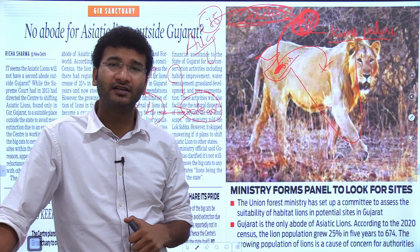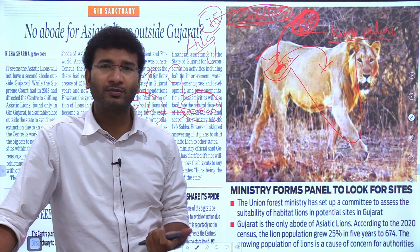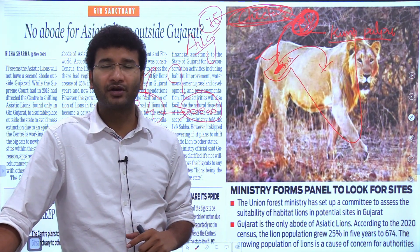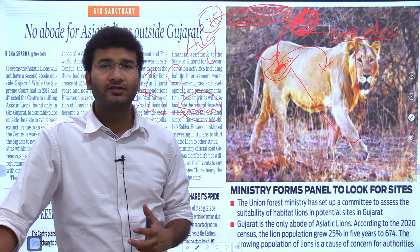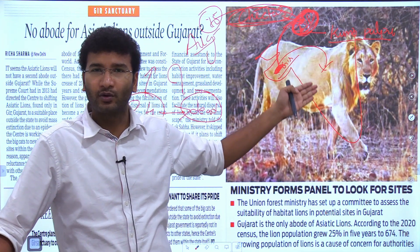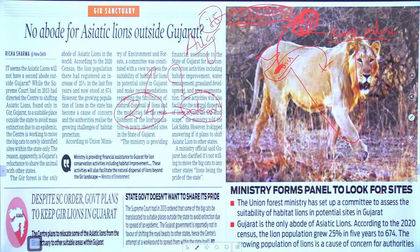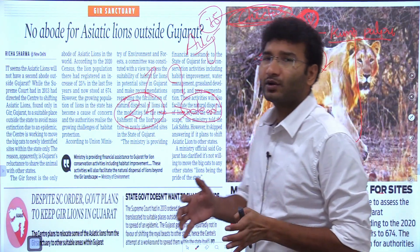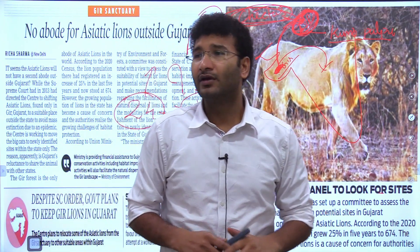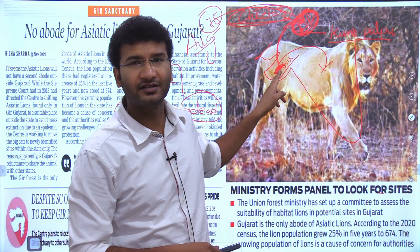This same principle applies to tigers and leopards. Keystone and umbrella species like lions and tigers need to be conserved. The Supreme Court gave clearance for lion relocation and a ministry panel has been set up to look for suitable sites. The earlier idea was to relocate the Gir lions to Kuno, but that has gone more or less silent.